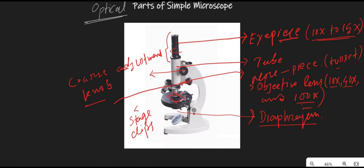The next part is called the fine adjustment knob or fine adjustment node. It is also used to focus, particularly when we use the 100x objective lens. When using the 100x objective lens we have to use immersion oil, and during this step we use the fine adjustment knob to precisely focus on the object.